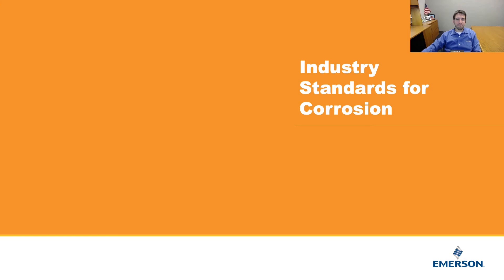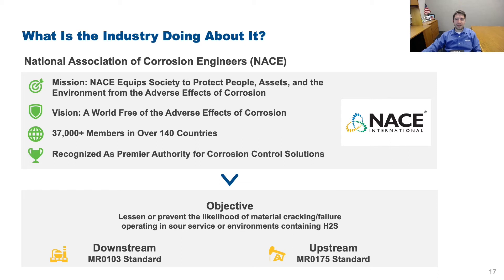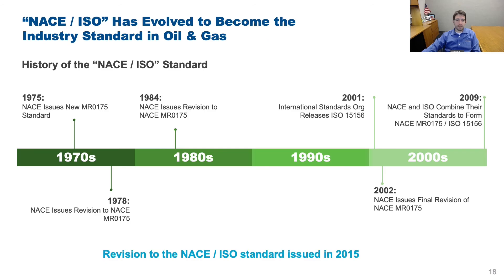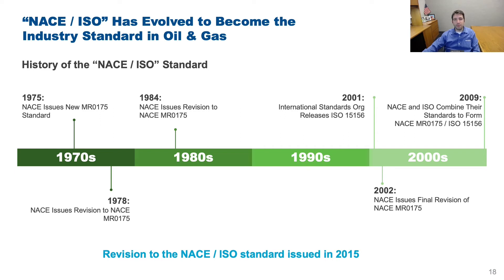Moving on to industry standards. The most active group in this area is the National Association of Corrosion Engineers, or NACE, widely accepted as the premier experts in corrosion science. Their upstream standard, known as MR0175, was developed in 1975. In 2009, NACE partnered with the International Standards Organization to form NACE MR0175/ISO 15156 — commonly referred to as NACE ISO — which is now the benchmark for corrosion mitigation in oil and gas. Although there is a separate NACE standard for downstream, many customers in that space default to NACE ISO.